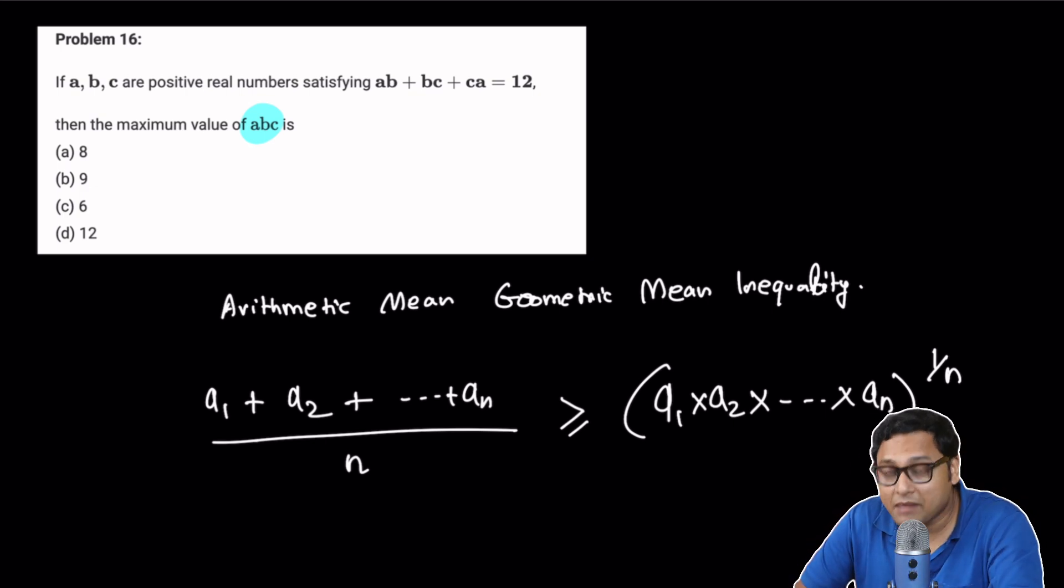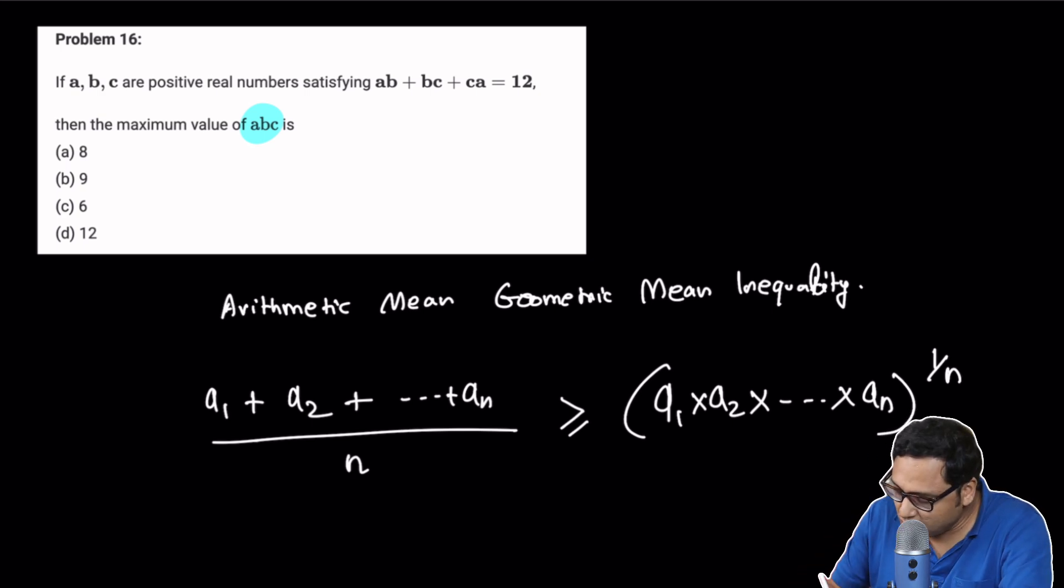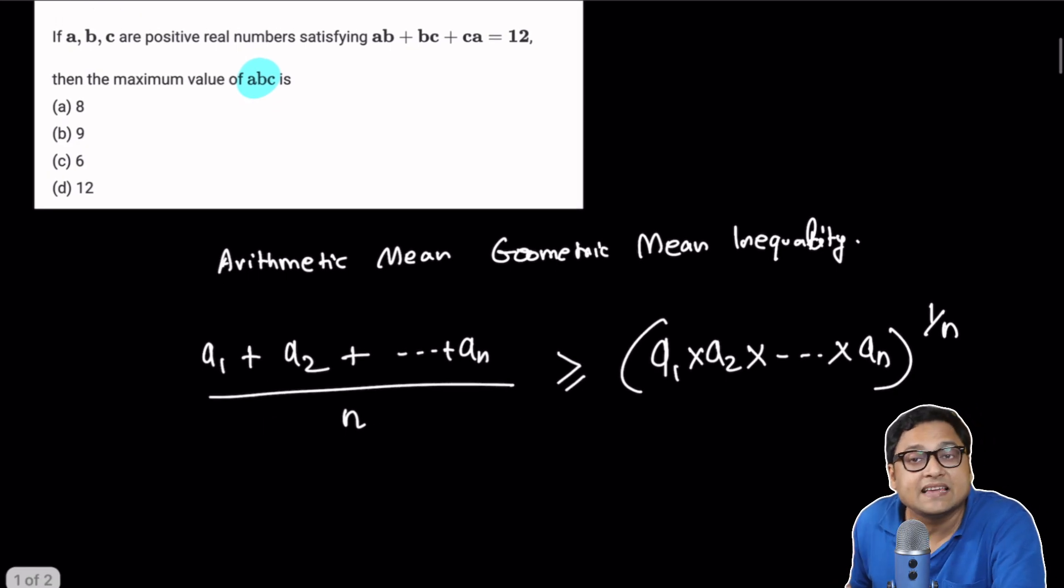Okay, with that in mind, we know that we can solve this problem in a couple of ways. We know that AB plus BC plus CA is equal to 12, and all of the numbers are positive numbers.